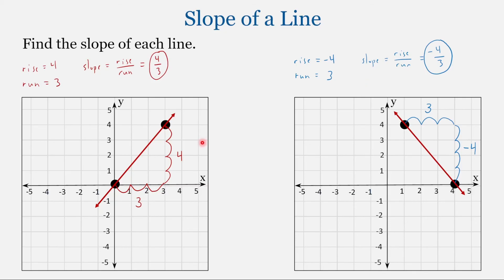Let's look at these two graphs together. With the first one, as we move from left to right the line went up, and that line had a positive slope. With the second graph, as we move from left to right the line goes down, and that line has a negative slope of negative 4 thirds. If a line goes up from left to right, the slope is positive; if a line goes down from left to right, the slope is negative.